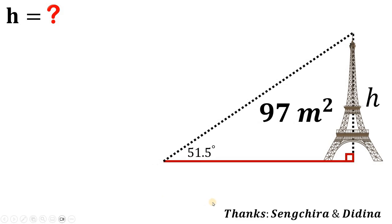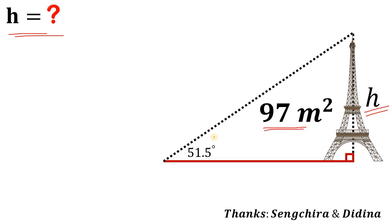This question comes from Saint Chira and Didina. Given this figure, we know that the height of this tower is H, which is unknown — this is what we want to find. The area of this right triangle must be equal to 97 square meters, and we also have a given angle of 51.5 degrees. To answer this question, let B be the base of this right triangle.